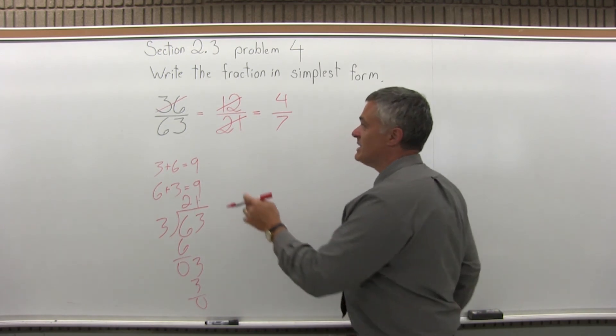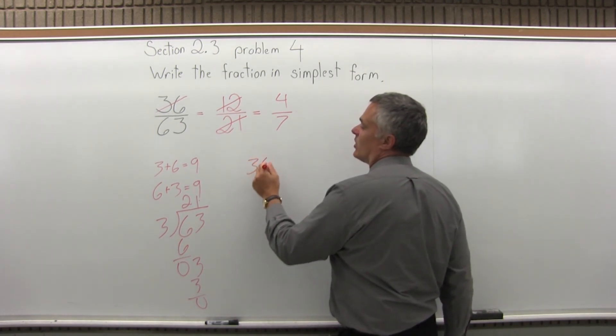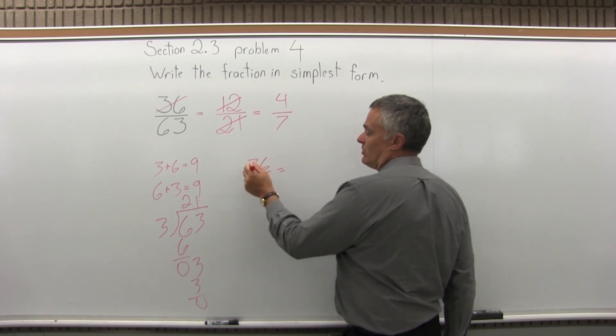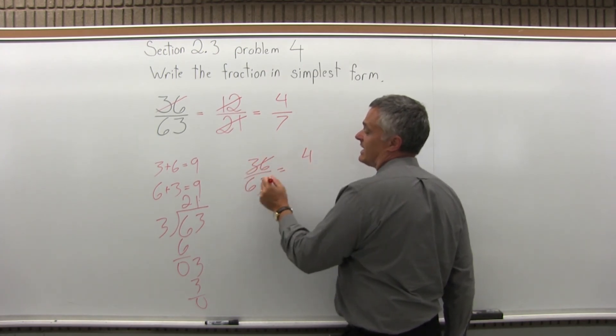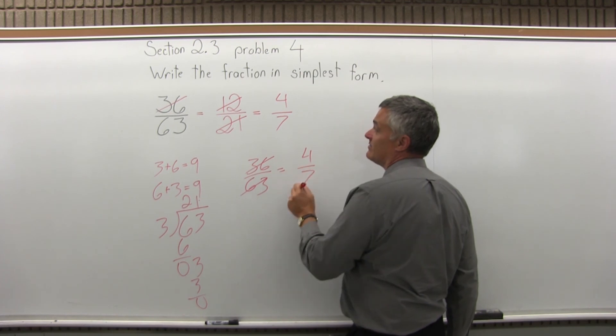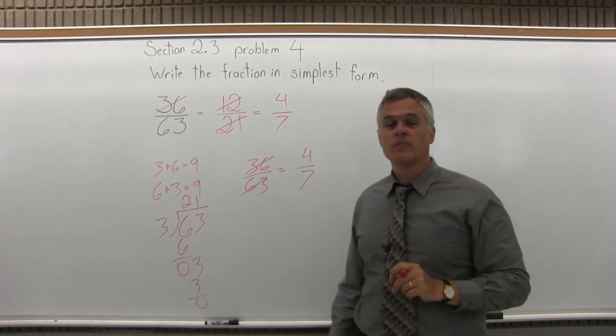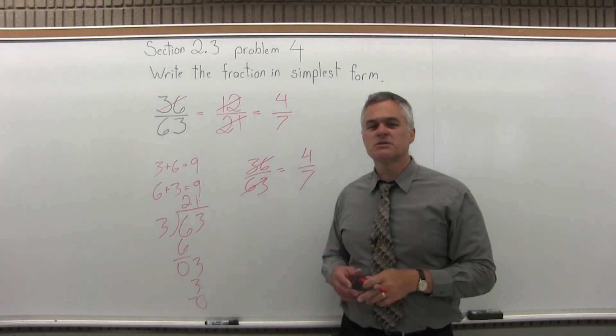Now again, I mentioned that I knew 9 would work. So if you happen to see the 9, 9 goes into 36 four times, 9 goes into 63 seven times. You'd get the same result in one step instead of two. But if you don't see it right away, two steps is okay.